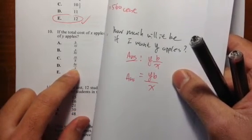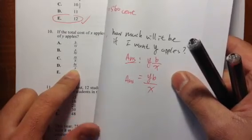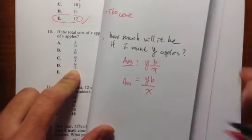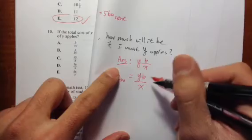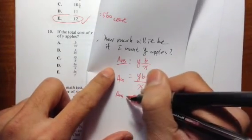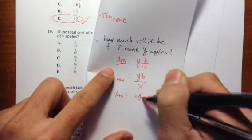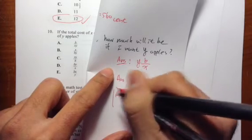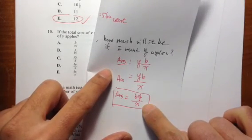And you can switch the order of multiplication. So I think the answer they want us to do is BY over X. They want us to do it like this.